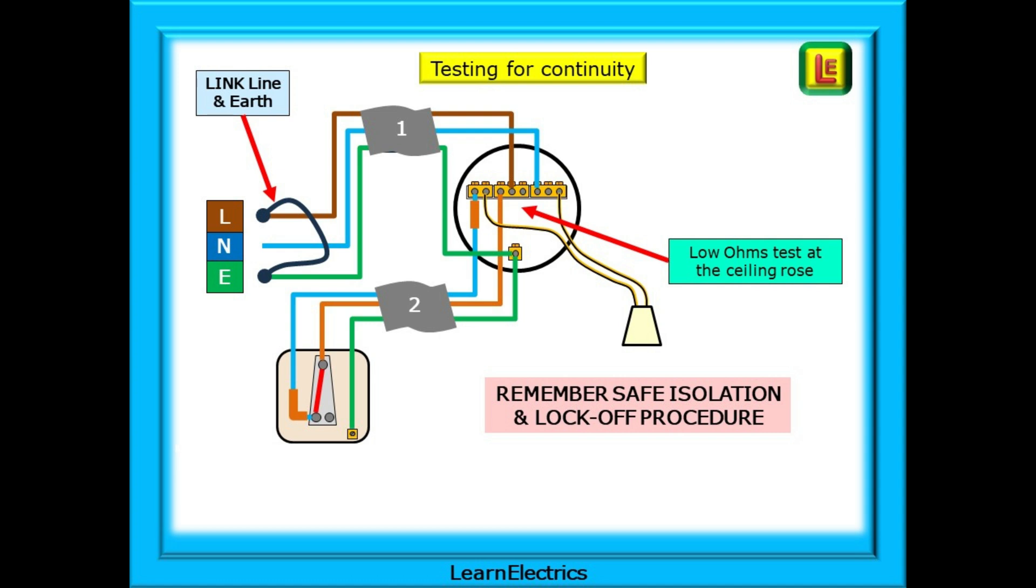Remember, if the circuit is still energized you will find out first. We should remove the line, neutral and earth or CPC conductors from their connections in the consumer unit. The free ends of the line and CPC should be linked together in the consumer unit either by a crocodile clip lead, waygos or similar. Then test the continuity of the line and CPC at the ceiling rows. Let's look at this.